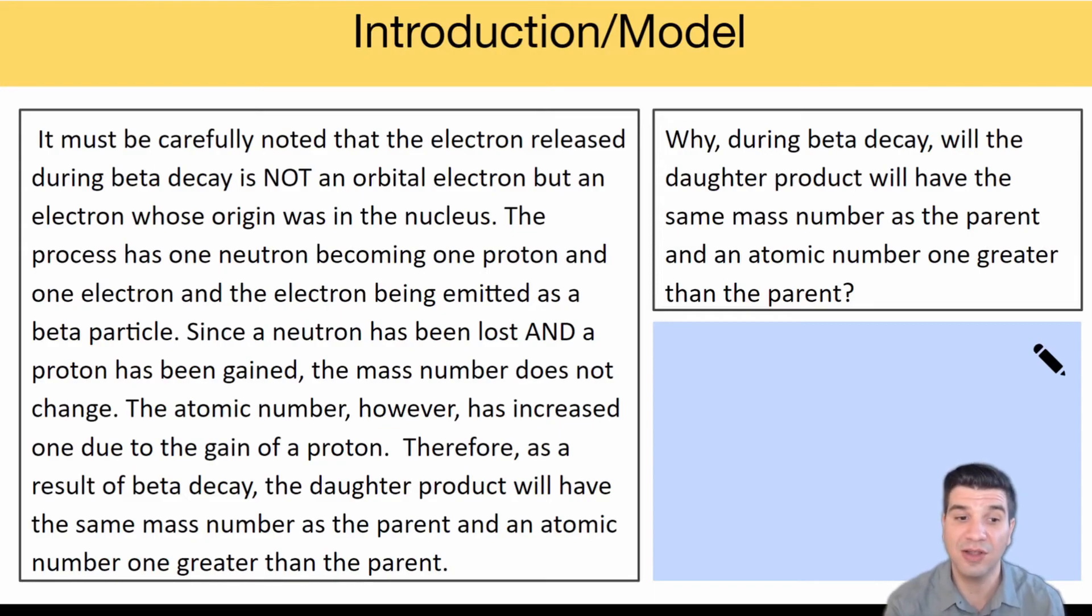Since a neutron has been lost and a proton has been gained, the mass does not change. The atomic number, however, has increased one due to the gain of that proton. Therefore, as a result of beta decay, the daughter particle will have the same mass number as the parent and an atomic number one greater. You still will see a change in element name.